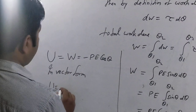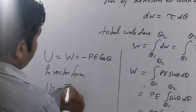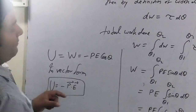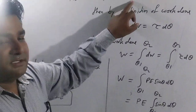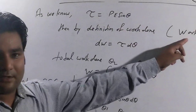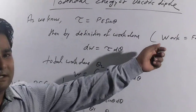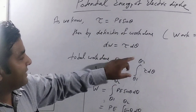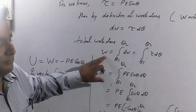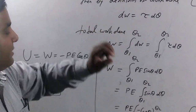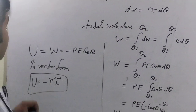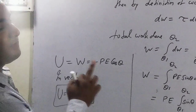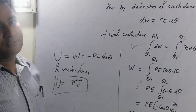In vector form, U = −p⃗·E⃗. This is a very simple concept — when you know the concept of work done from classes 9, 10, and 11, you compute small work done for small displacement, integrate from θ₁ to θ₂, and finally get the result pE cosθ with a negative sign. In vector form the cosθ component is what gives the dot product of two vectors. That's all for today.